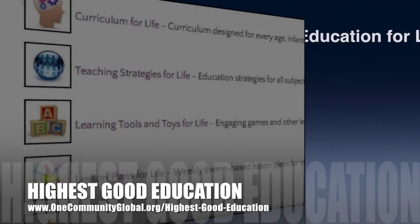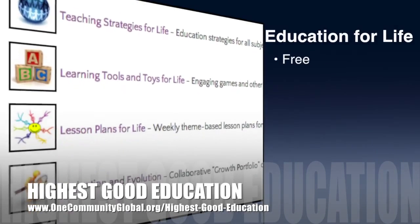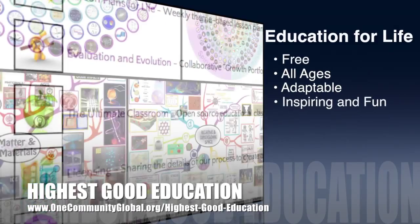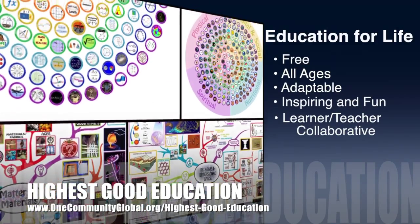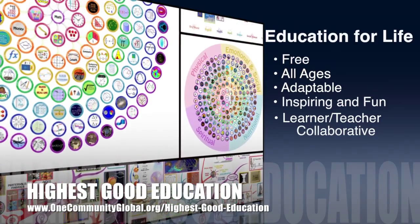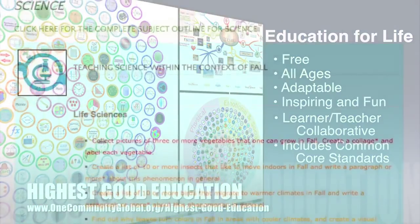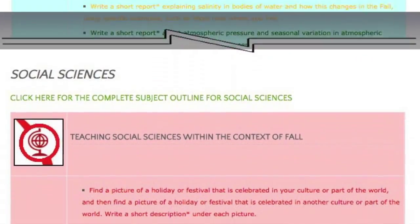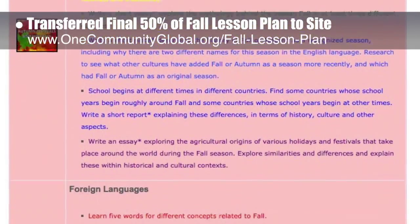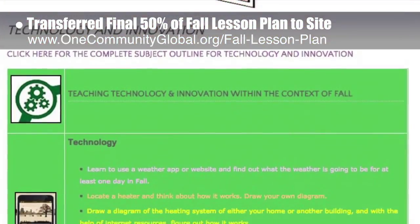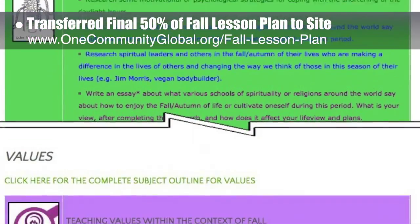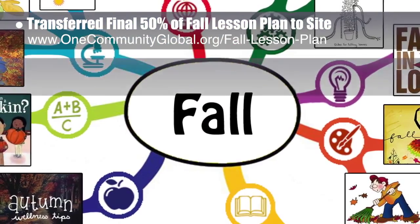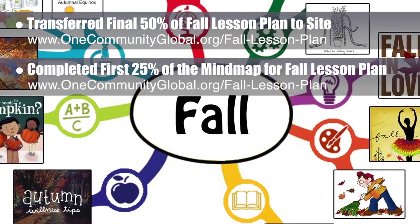One Community's approach to highest good education is open source and free shared, designed for all age groups, adaptable to any schooling environment, inspiring and fun for all participants, a learner-teacher collaborative, and includes U.S. Common Core standards. This week the core team transferred the final 50% of the written content for the fall lesson plan to the website. This lesson plan is purposed to teach all subjects to all learning levels in any learning environment using the central theme of fall. We also completed and added the first 25% of the mind map for the fall lesson plan and fall subject theme icons to the web page.